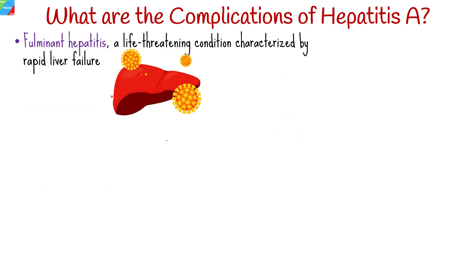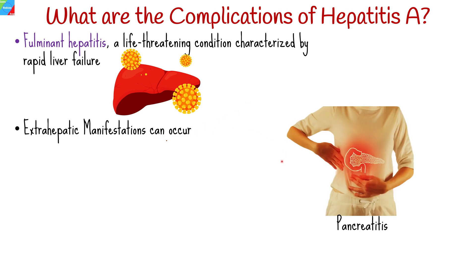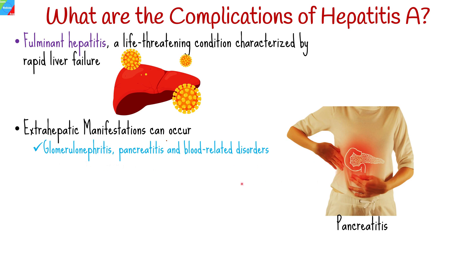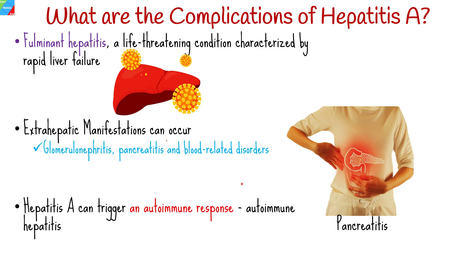Hepatitis A can lead to fulminant hepatitis, a life-threatening condition characterized by rapid liver failure that requires immediate medical intervention. Extrahepatic manifestations can also occur, as hepatitis A can affect organs and systems outside the liver, causing complications such as glomerulonephritis, pancreatitis, and blood-related disorders. Finally, hepatitis A can trigger an autoimmune response in some individuals, leading to autoimmune hepatitis.